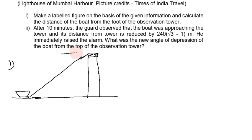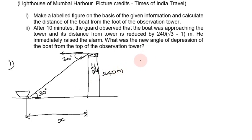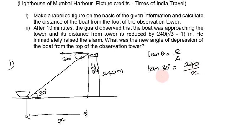The angle of depression is 30 degrees, which equals the angle of elevation of 30 degrees. The height is 240 meters. To calculate the distance of the boat from the foot of the tower, we use tan theta equal to opposite over adjacent. So tan 30 degrees equals 240 divided by x, and tan 30 degrees equals 1 over root 3.